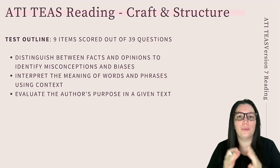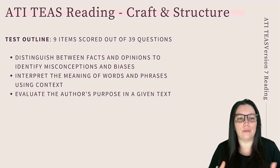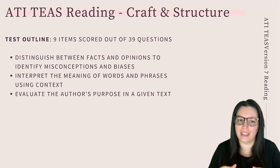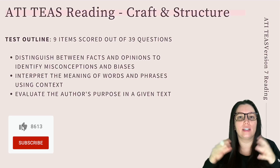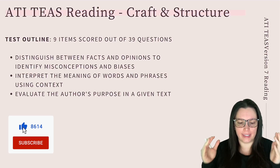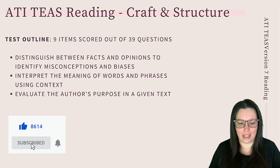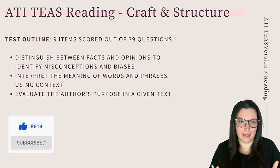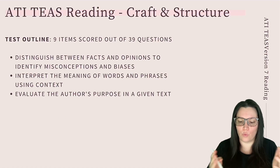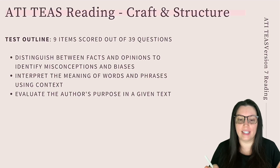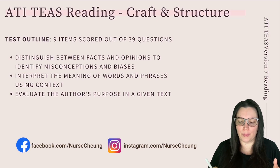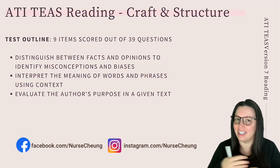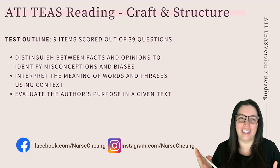For the craft and structure portion of the exam, there's going to be a total of nine questions out of 39. That will cover distinguishing between facts and opinions to identify misconceptions and biases, interpreting the meaning of words and phrases using context, and evaluating the author's purpose in a given text. Let's break each one of these down.